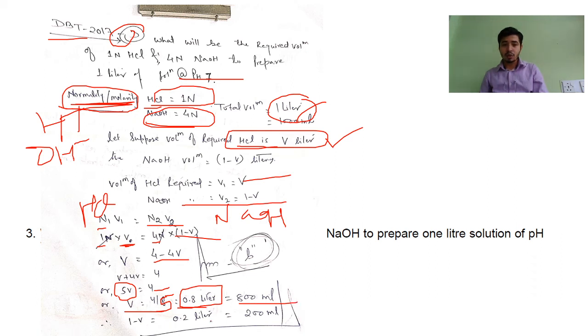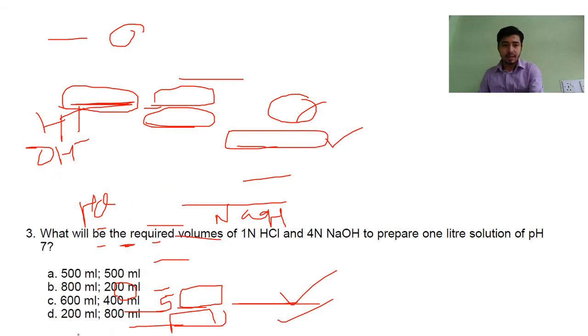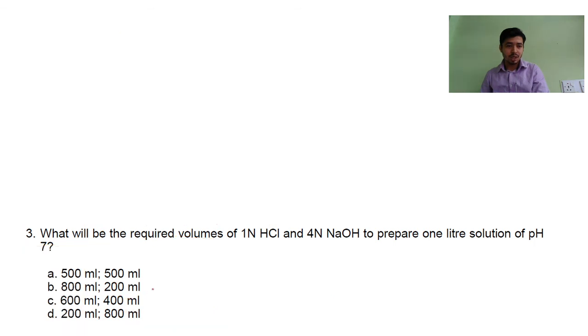And NaOH will be 0.2 liter, because total volume is 1 liter. When you convert to ml, it becomes 800 ml HCl and 200 ml NaOH. When you check the answer, 800 and 200 is in option B.